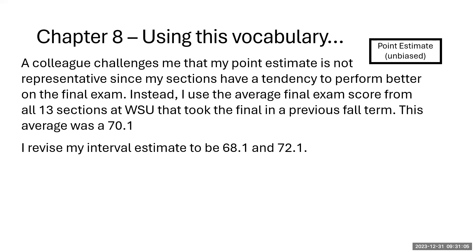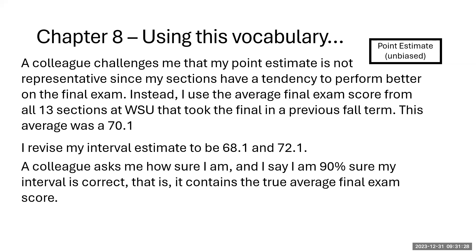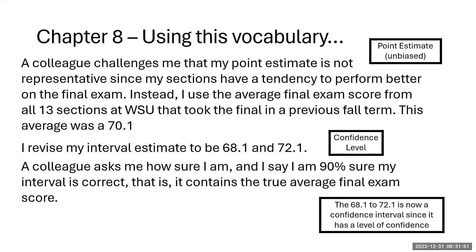I revise my interval estimate to 68.1 to 72.1, because the point estimate has changed. A colleague asks how sure I am that my interval will capture the true average final exam score for all sections. I say I'm 90% sure — I've assigned a level of confidence of 90%. So the range 68.1 to 72.1 is now a confidence interval because I've assigned it a level of confidence. It went from just a range of values to having some probability behind it.